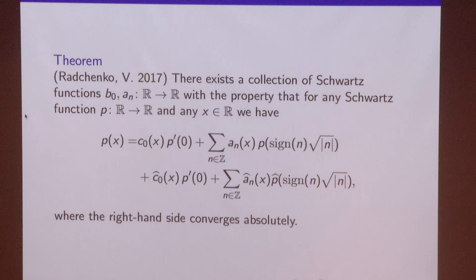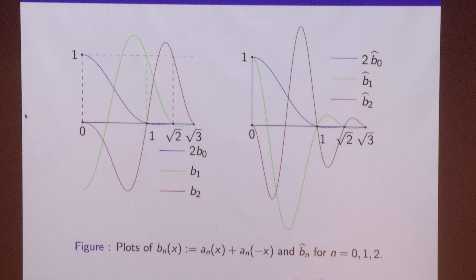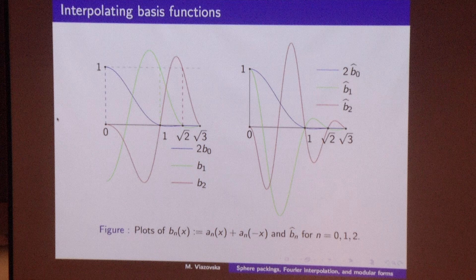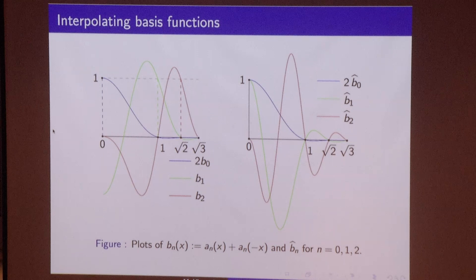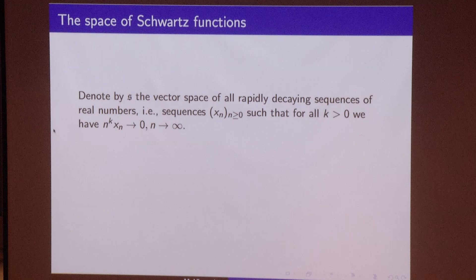If you want to reconstruct not only even but also odd functions, we also have to include the derivative at zero. By B we denote the even part of our basis functions, and they look like this.